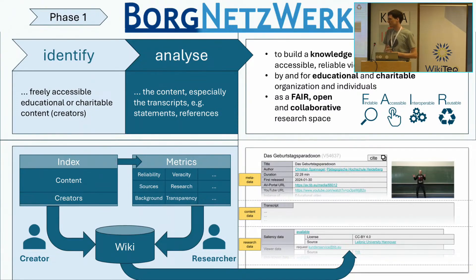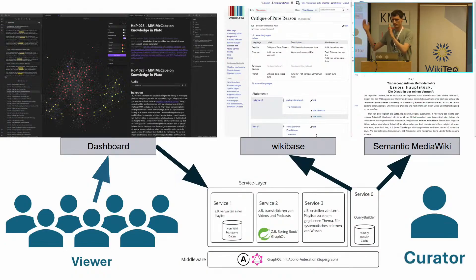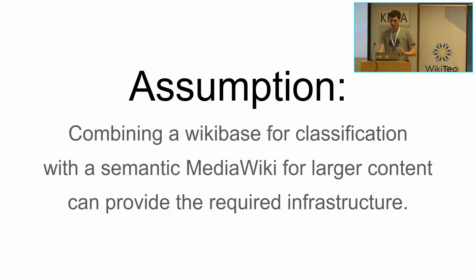I said I will skip over most of this — I'll leave it hanging here for a second. But for anybody whose attention I caught and is interested in the detailed slides, feel free to contact me. We have a presentation layer and a database layer — you know all those terms. The assumption: combining a Wikibase for classification with a Semantic MediaWiki for larger content can provide the required infrastructure. Think of this as something like Wikidata plus Wikisource — structured data and large content in a MediaWiki.